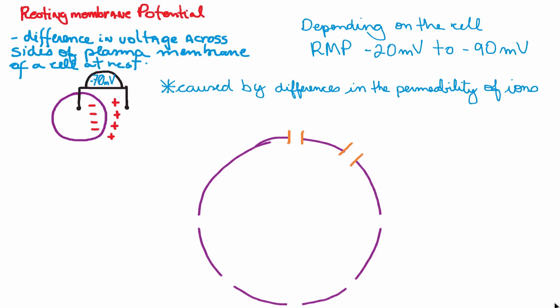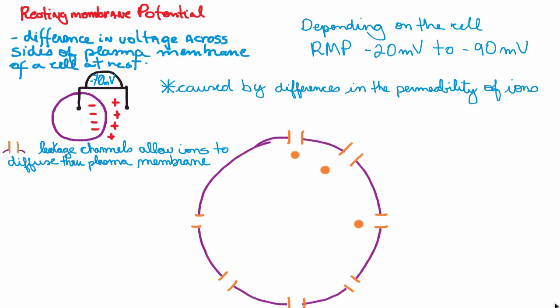I'm going to draw here a giant cell and put lots of ion channels here. Specifically, I'm putting these leakage channels that will allow ions to diffuse through the plasma membrane. Highlighted in orange here are my potassium channels - those are potassium leakage channels. Because there are some potassium inside that cell, through time these potassium ions would diffuse through the cell.